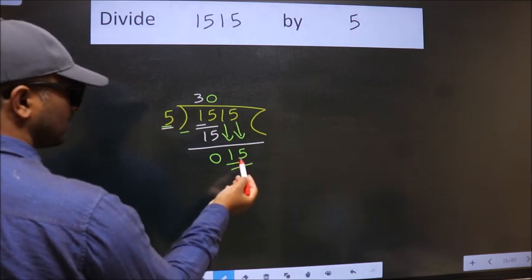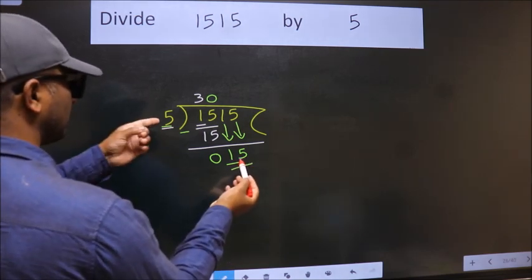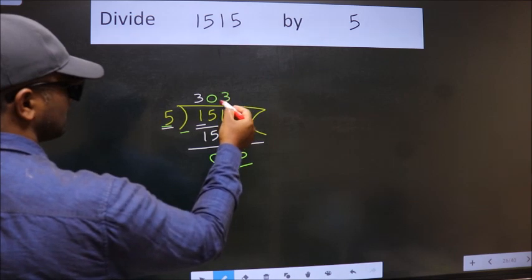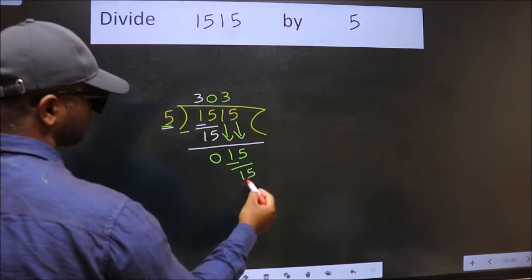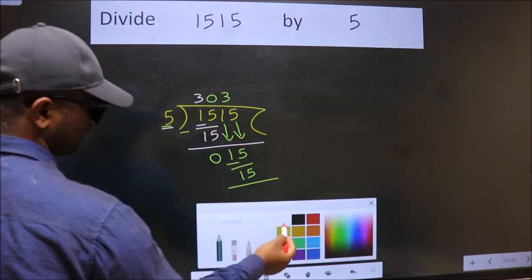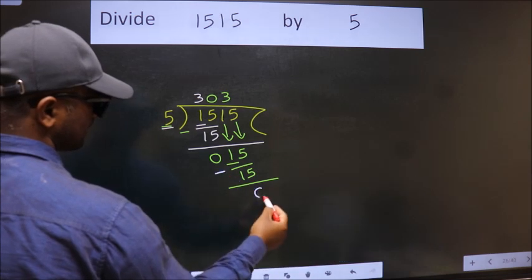So, 15. When do we get 15? In the 5 table, 5 times 3 is 15. Now, we subtract. We get 0.